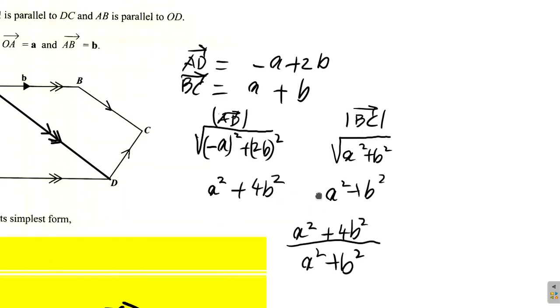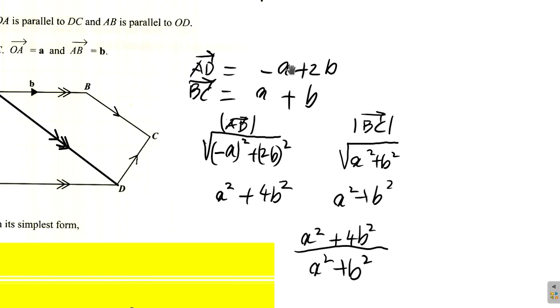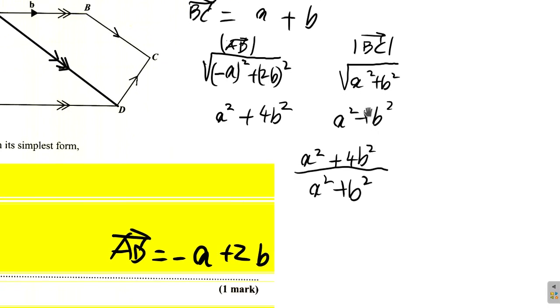Now suppose you consider a squared plus 4b squared over a squared plus b squared. A squared plus 4b squared. When you do that, so here when you do the calculation for the magnitude of AD to the square root of a squared plus 2b squared, you get a squared plus 4b squared. And you do that for BC, you have a squared plus b squared. If you divide them, and by the way I had dropped the square root sign, but it's not really necessary to drop the square root sign, at least not yet.